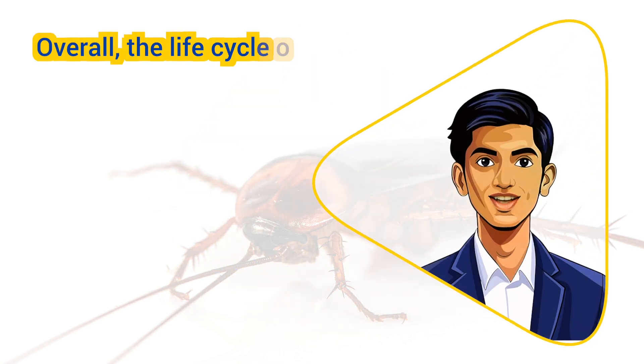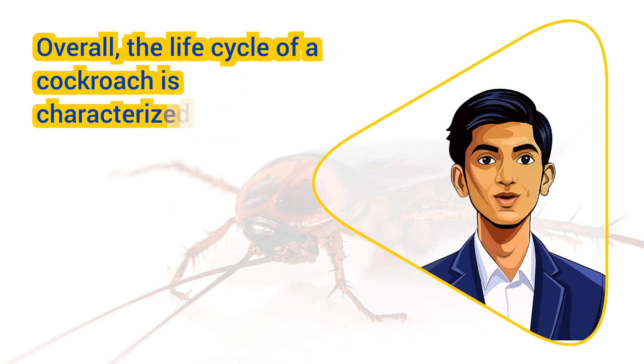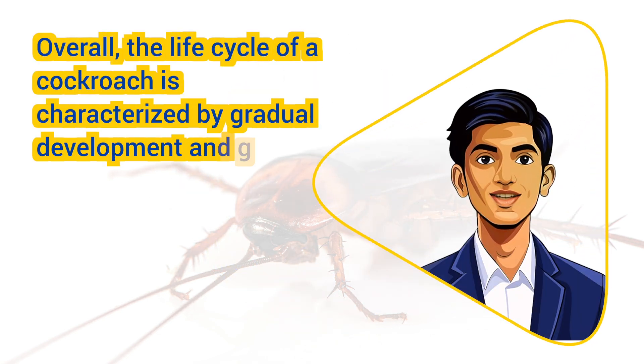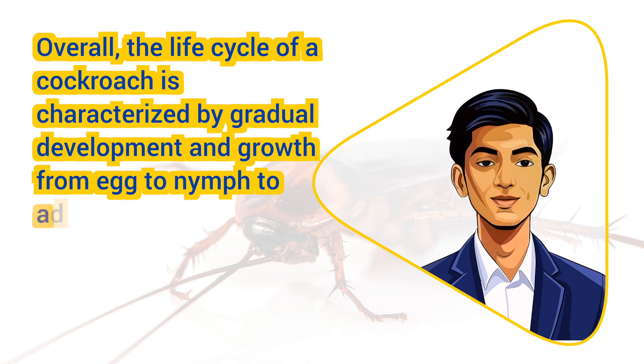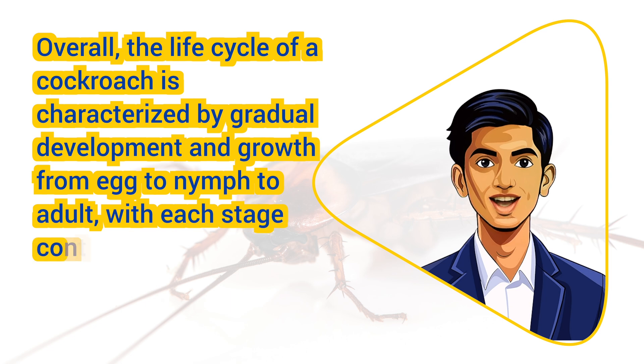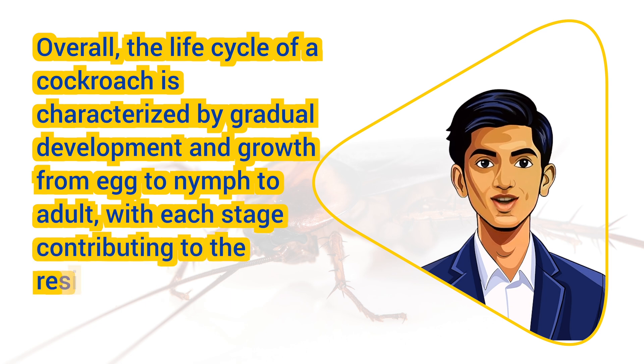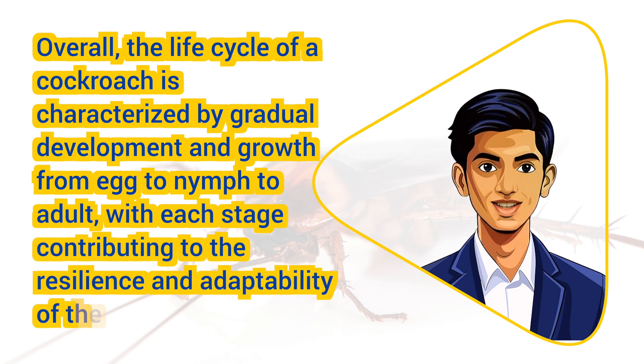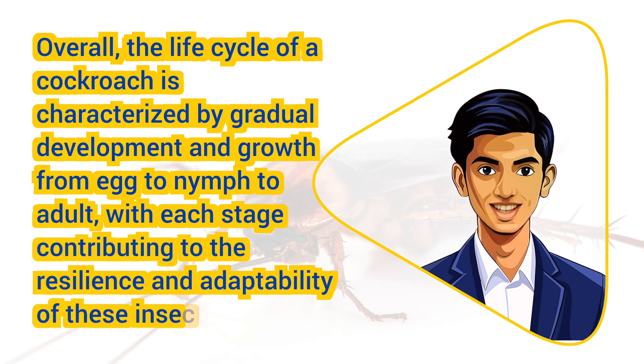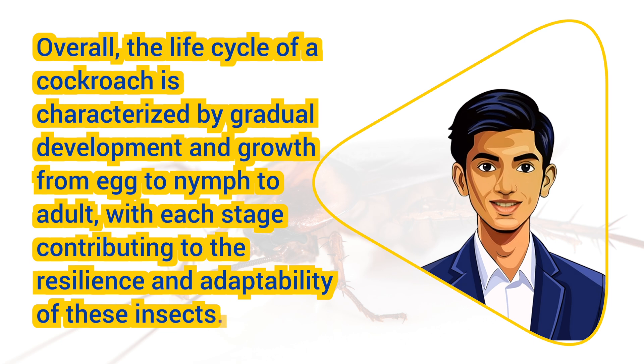Overall, the life cycle of a cockroach is characterized by gradual development and growth from egg to nymph to adult, with each stage contributing to the resilience and adaptability of these insects.